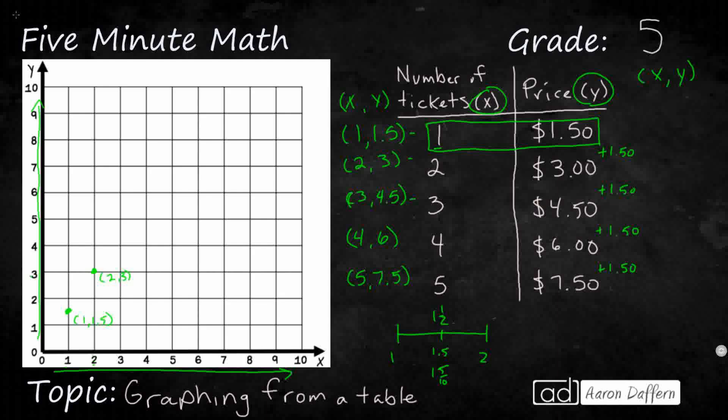This next one's going to be a little bit trickier. I've got my 3, the x is easy. 4.5 though is going to be right here in between my 4 and my 5, so let's put that right there. So my x value of 3, four and five tenths is my y value.